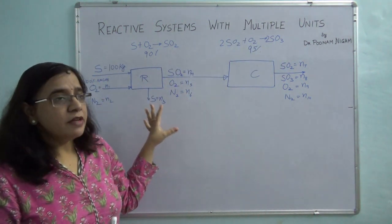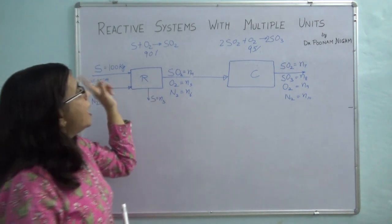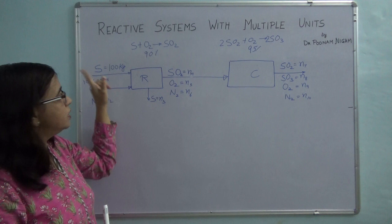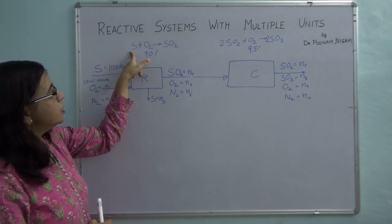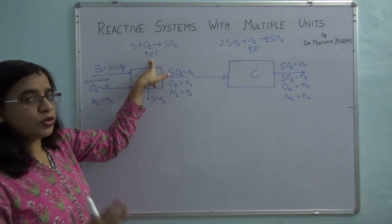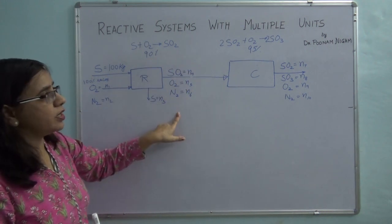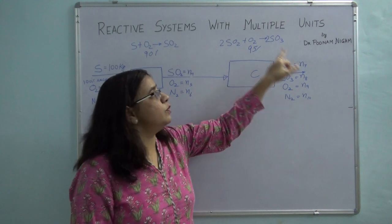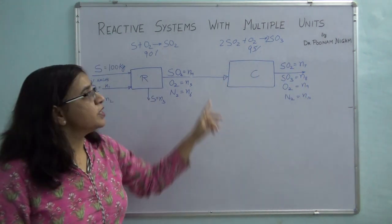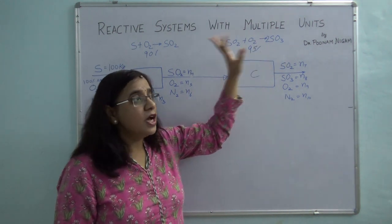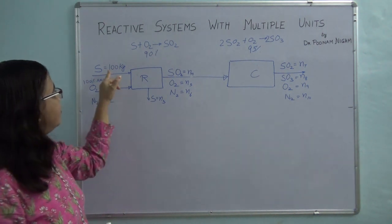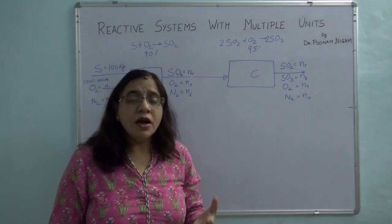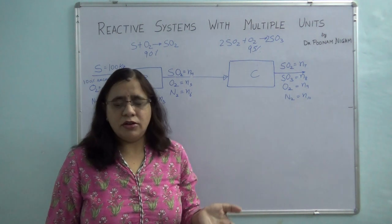This is an example taken from Himmelblau, and it involves the production of sulfuric acid. For producing sulfuric acid, sulfur is burnt with excess of oxygen. This reaction has only 90% conversion. The products then go to a converter where, in presence of oxygen, sulfur dioxide gets converted into sulfur trioxide. The conversion of this second reaction is given as 95%. The basis for this problem is 100 kg of sulfur.